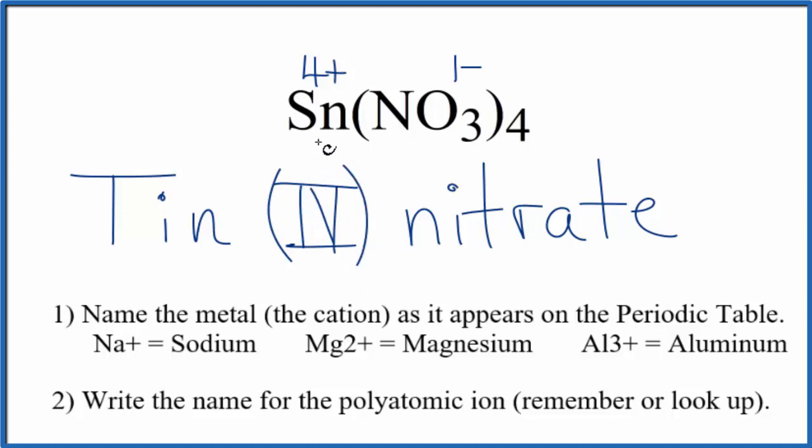So the name for Sn(NO3)4 is tin(IV) nitrate. If you're given the name, this four tells you that the tin has a four plus ionic charge, so you're going to need four of these one minus nitrates when you write the formula.